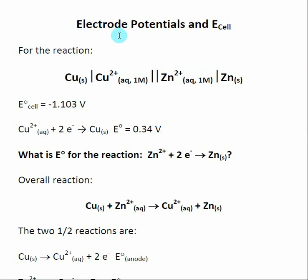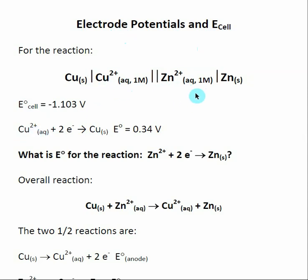Let's look at an example where we utilize the relationship between electrode potentials and E cell to perform a calculation. I've given you the cell diagram of an electrochemical cell, the E naught cell for this electrochemical cell, and information about the reduction potential for one of the species involved. Overall, what we're looking for is the E naught for a given half reaction.